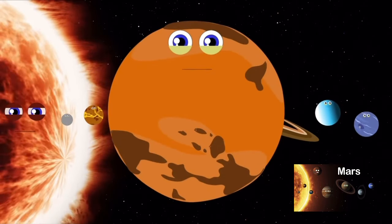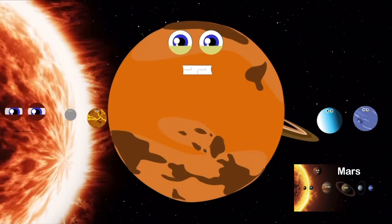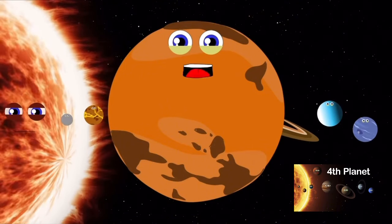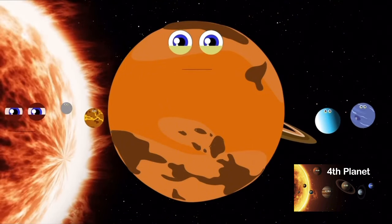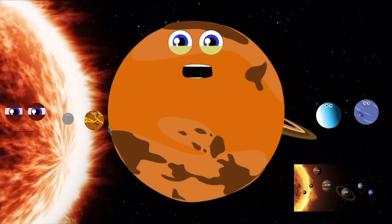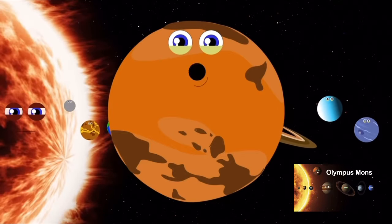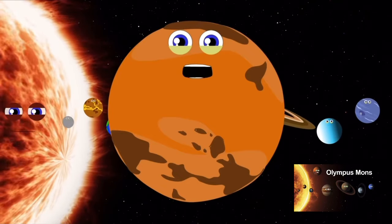My name is Mars, I am red in color, and the fourth planet from the sun. I have the highest mountain in our solar system, a volcano named Olympus Mons.